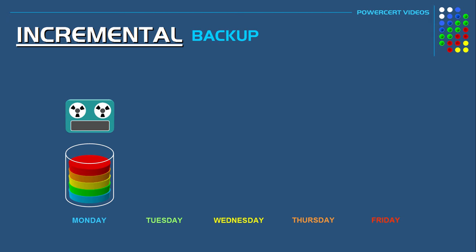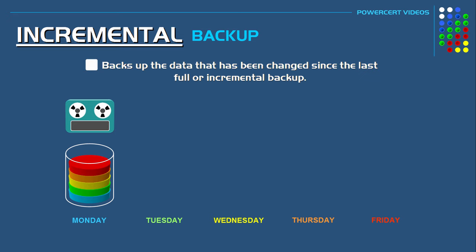Now an incremental backup is much faster than a full backup. Because in an incremental backup, the only data that is backed up is the data that has been changed since the last full or incremental backup. So for example, let's say a company does a full backup on Monday and does incremental backups Tuesday through Friday. Again, the only data that is backed up is the data that has been changed since the last full or incremental backup.